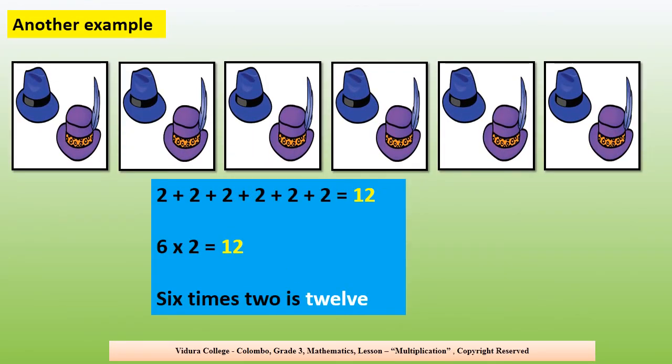Here is another example. There are 6 groups of hats. There are 2 hats in each group. To find the total number of hats, you should add 2 six times. Then you will get the answer as 12. You can write it as 6 multiplied by 2 is 12. It can be read as 6 times 2 is 12.